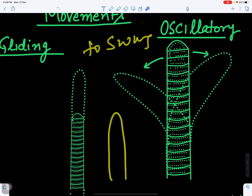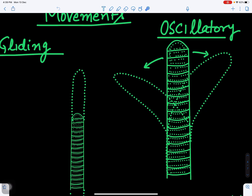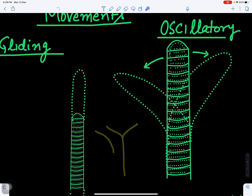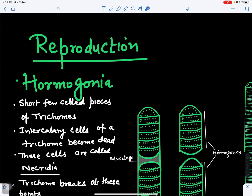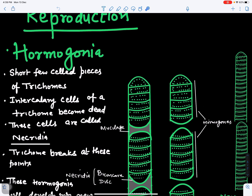The oscillatory movement is a pendulum-like swinging in two directions. Both gliding and oscillatory movements are possibly due to secretion of mucilage in the thallus, which helps the filament move.